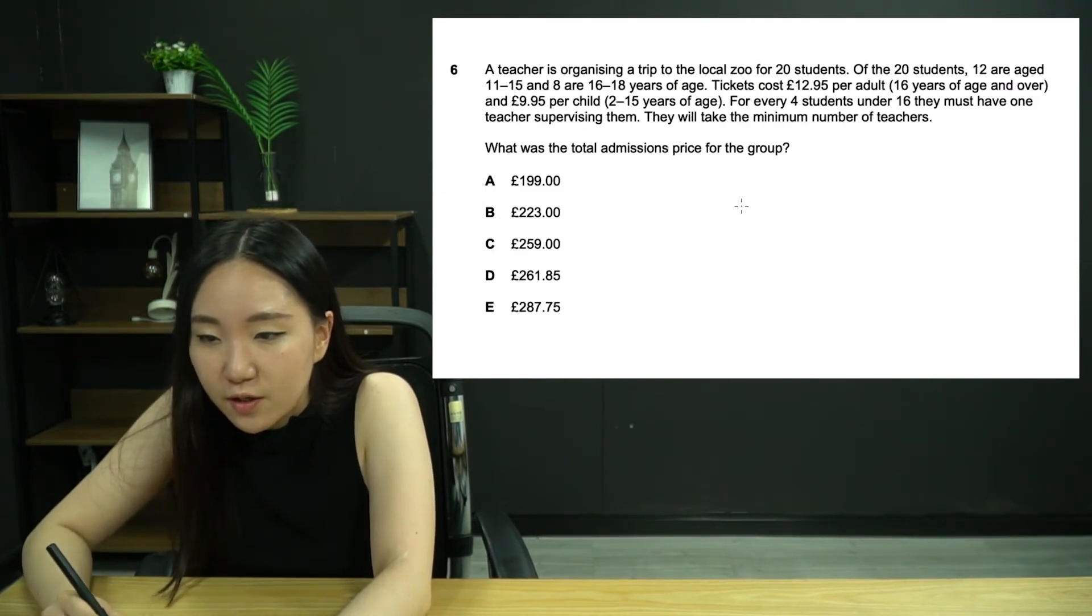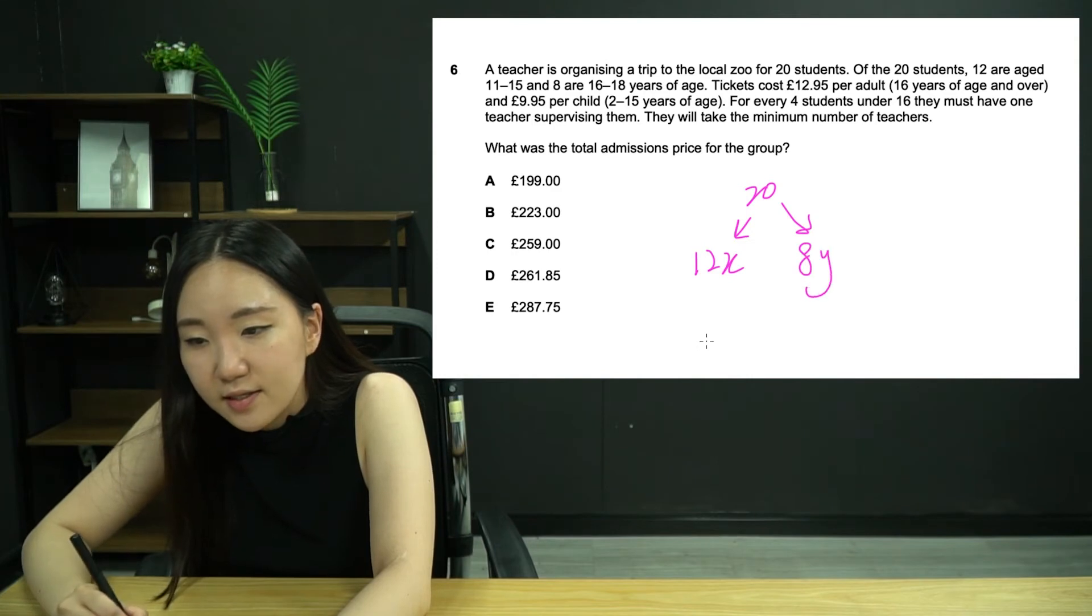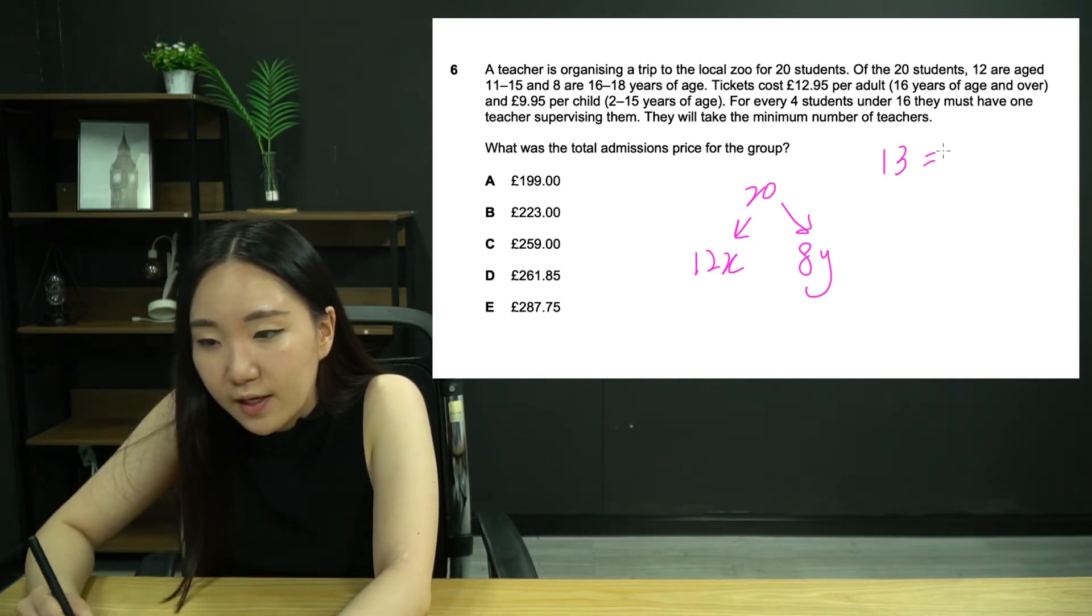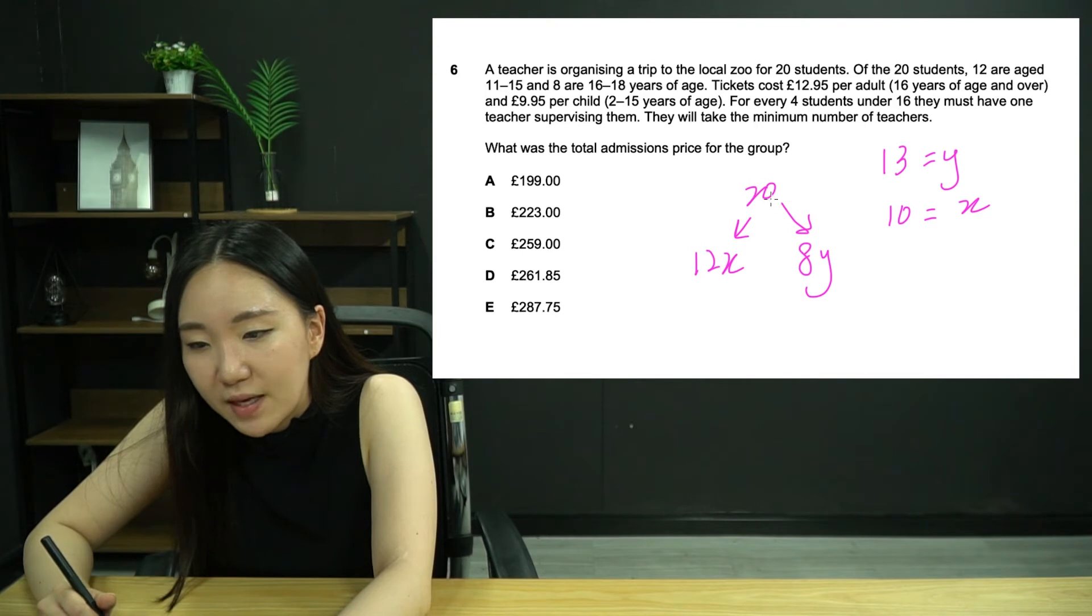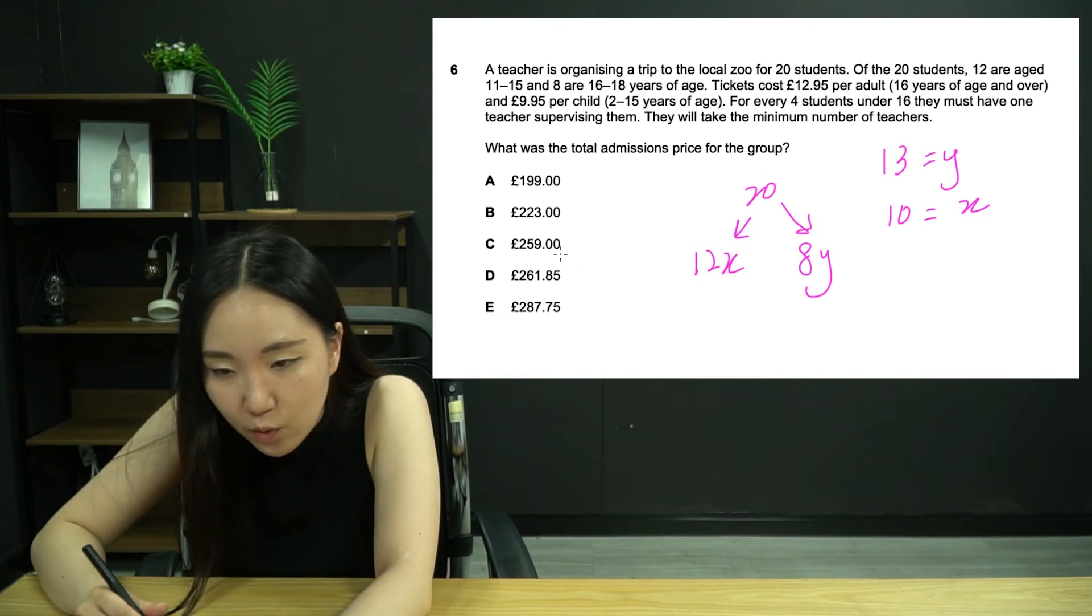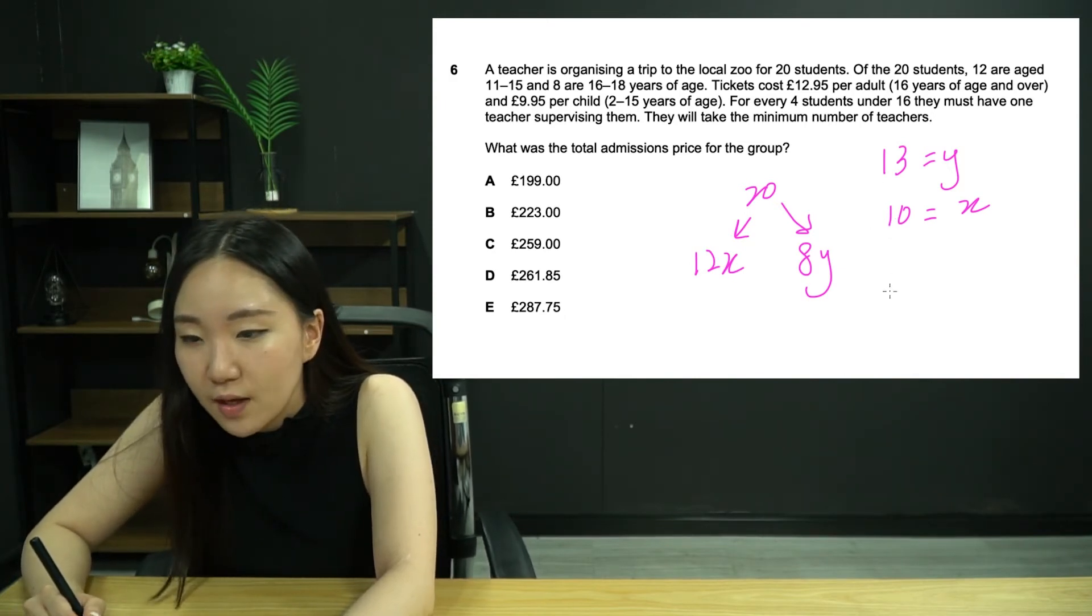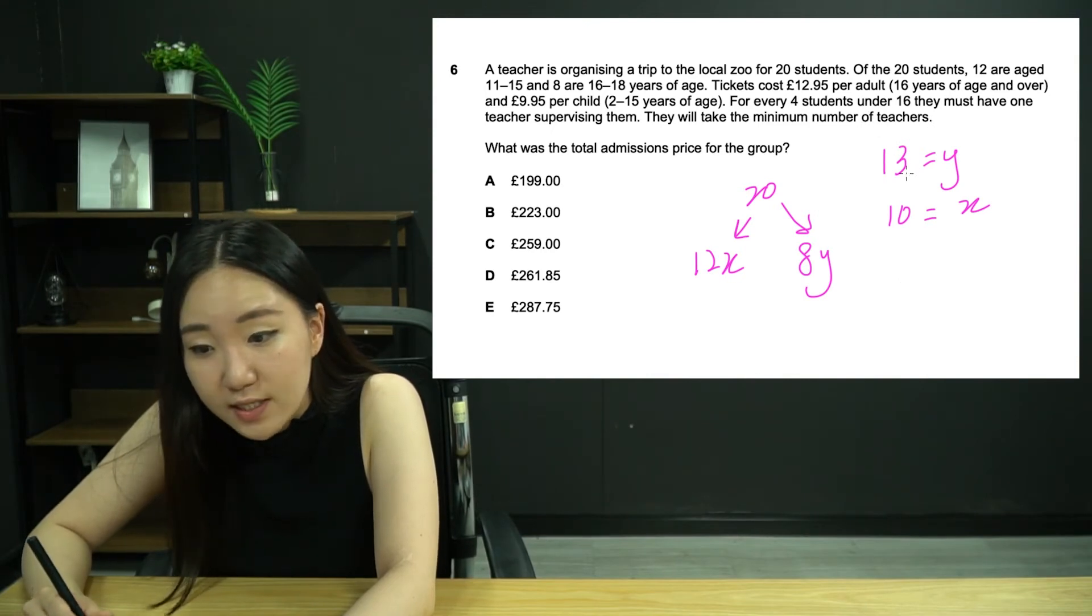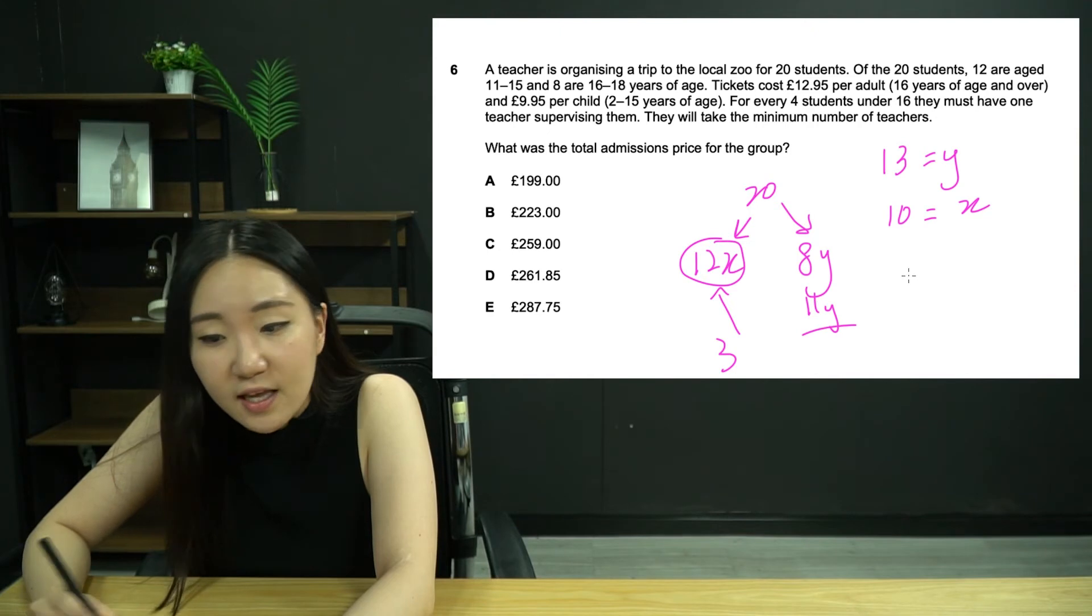Six, a teacher is organizing a trip to the local zoo for 20 students. 12 are 11 to 15, the children, and eight are 16 to 18. Tickets cost £13 for the adults and £10 for the younger children. I am doing a little bit of a roundup, five pence in each case, because if you do five pence times 20, that only gives you one pound difference. But these are more than one pound difference, even the smallest gap. So I'm happy to round up.